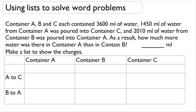Now let's talk about how we can use lists to solve word problems. The question in front of us says, Container A, B, and C each contain 3,600 mL of water. 1,450 mL of water from container A was poured into container C,